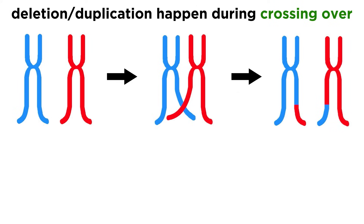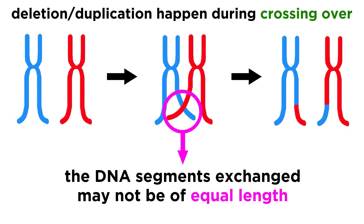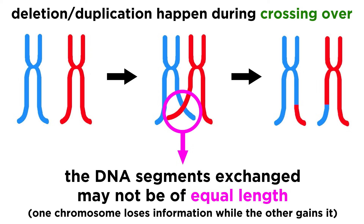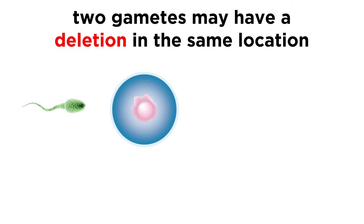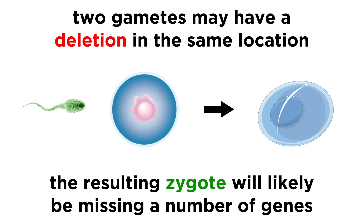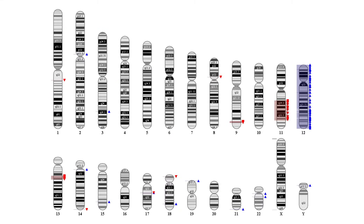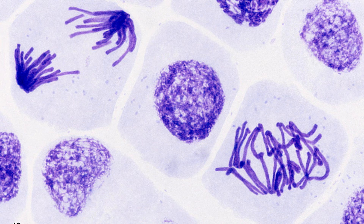Deletion and duplication is relatively common during crossing over in meiosis. This can happen when the segments of DNA that are exchanged are not of equal length, such that one loses information and the other gains it, hence one deletion and one duplication. If two gametes with significant deletion in the same location are involved in fertilization, it can result in a zygote that is missing a number of genes, which can very easily lead to miscarriage or death in early childhood. Much progress has been made in linking certain conditions to specific chromosomal deletions or translocations, which represents a huge step forward for science. And with that, we have a better understanding of chromosomes, as well as fascinating alterations in their number and structure.